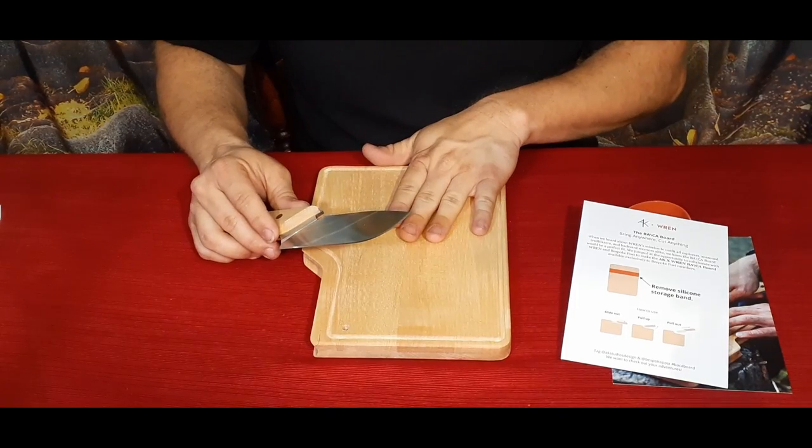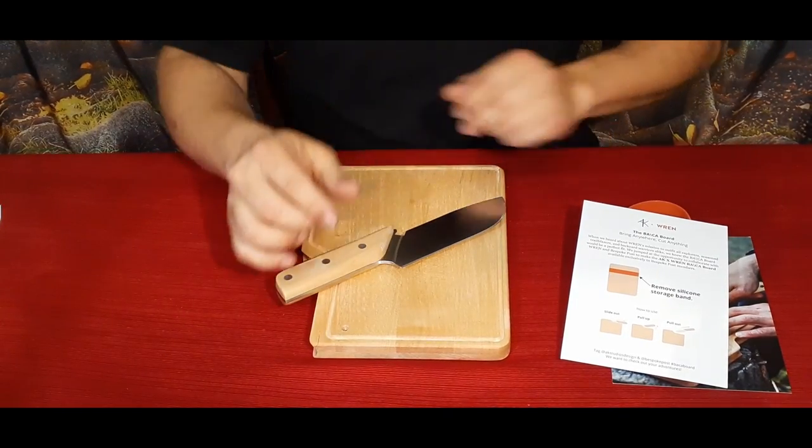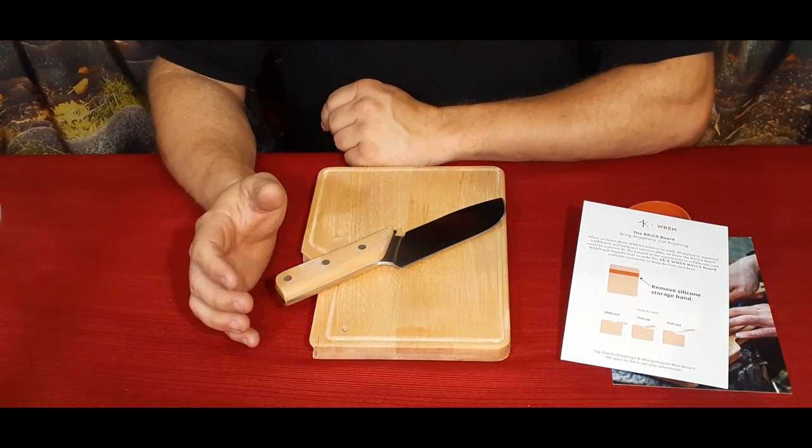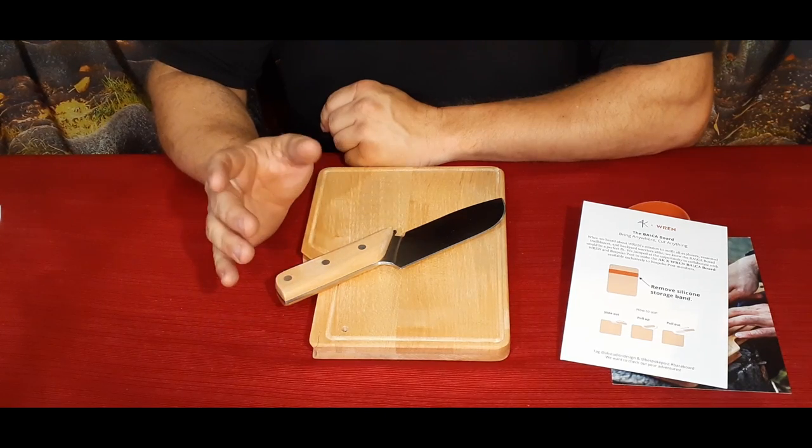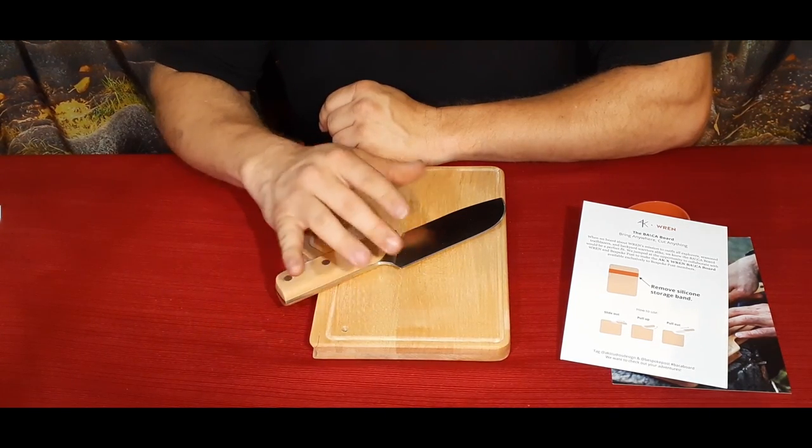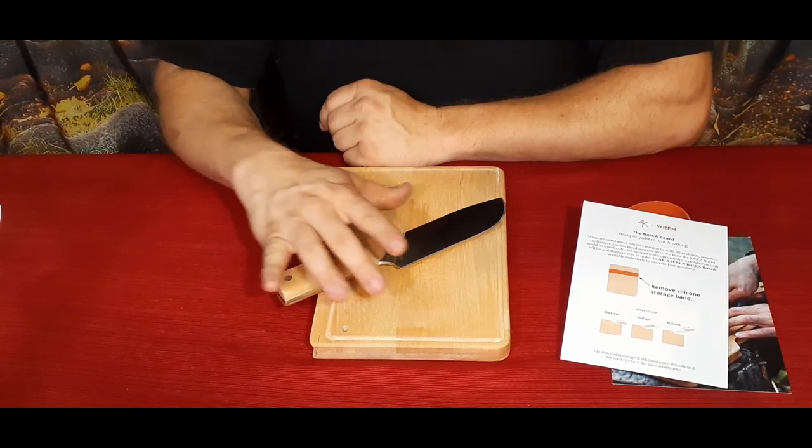If you want to check out this, if you want to pick it up from Bespoke Post, of course you can go down there in the description below and there will be of course the link to that. If you use that link and you haven't gotten anything from them before, you can get 20 bucks off of your first box, be it this one or be it one with other items in it. There are ones that have more singular items like this or there are some that have a handful of different items.